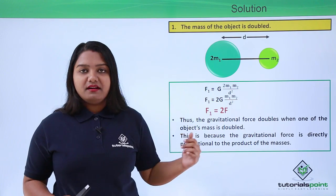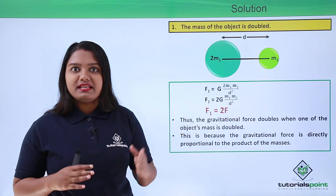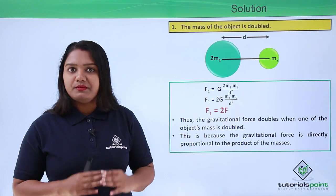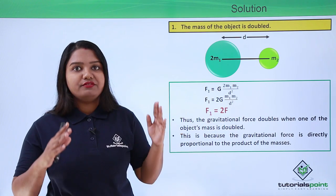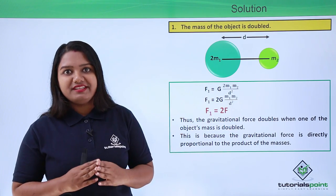This is because the gravitational force is directly proportional to the product of the masses of the two bodies.